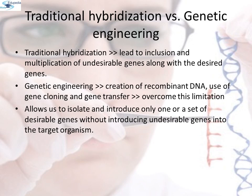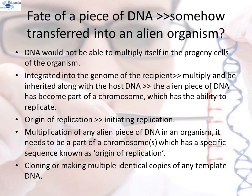The techniques of genetic engineering, which include creation of recombinant DNA, use of gene cloning and gene transfer, overcome this limitation and allow us to isolate and introduce only one or a set of desirable genes without introducing undesirable genes into the target organism. Most likely, a piece of DNA transferred into an alien organism would not be able to multiply itself in the progeny cells. But when it gets integrated into the genome of the recipient, it may multiply and be inherited along with the host DNA, because the alien piece of DNA has become part of a chromosome which has the ability to replicate.